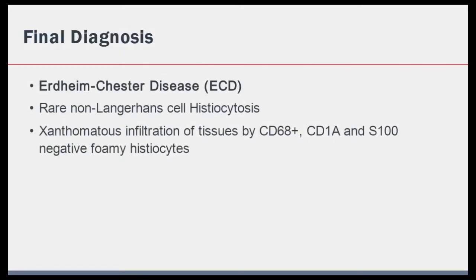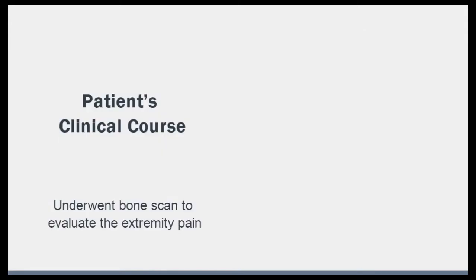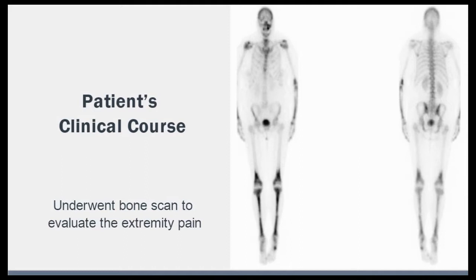Erdheim-Chester disease, or ECD, is a rare non-Langerhans cell histiocytosis characterized by xanthomatous infiltration of tissues by histiocytes that stain positive for CD68 but are negative for the typical Langerhans cell markers CD1A and S100. ECD is a systemic disorder and can involve a variety of organ systems. By far the most common manifestation is symmetrical sclerotic involvement of the long bones, typically in the lower extremities. Given the high degree of extremity involvement in ECD and the complaints of leg pain in our case, we performed a bone scan which showed increased uptake diffusely within the tibias and symmetrically at the distal diaphysis and metadiaphyseal regions of each femur as well as the distal left humerus, consistent with the diagnosis of ECD.